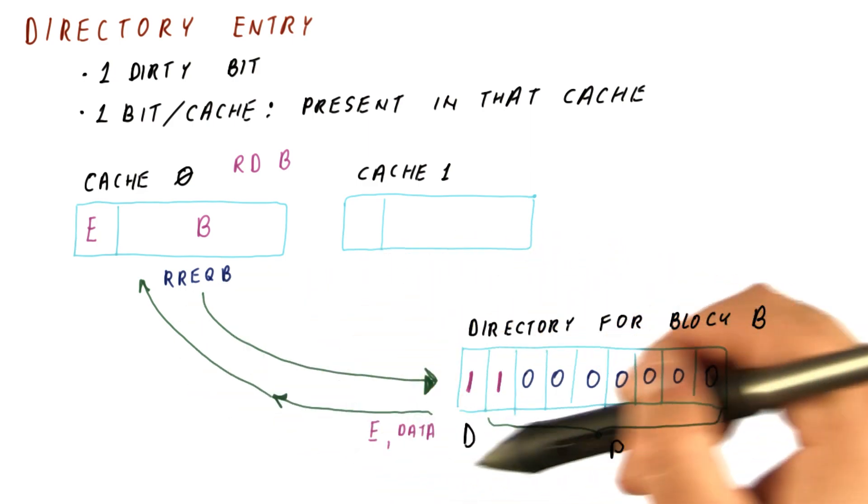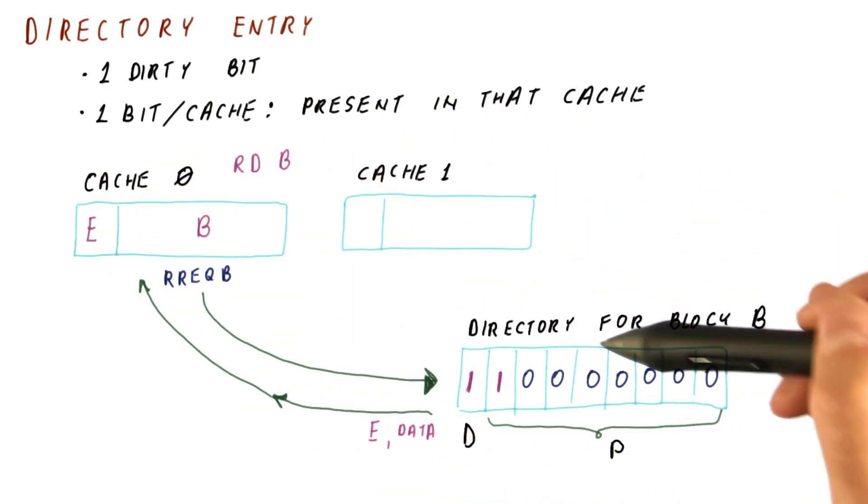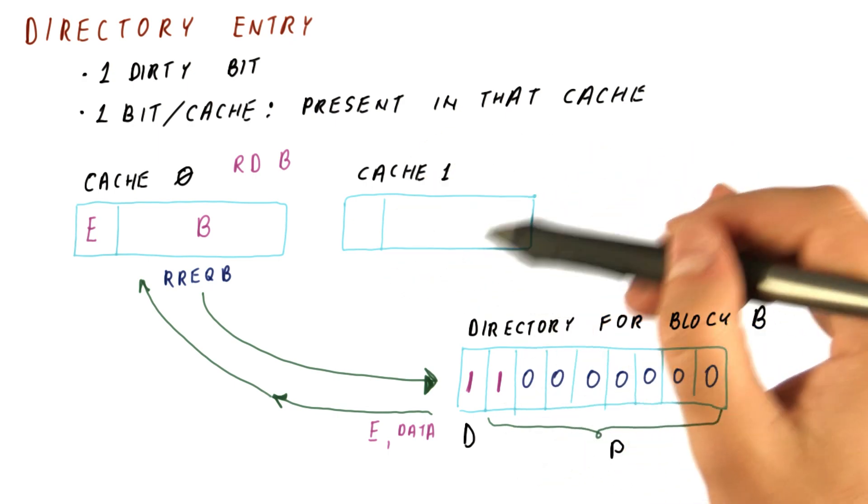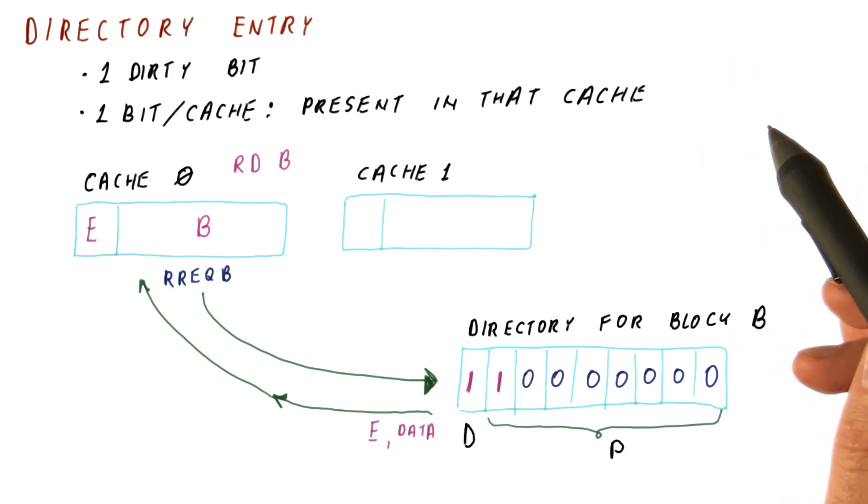So now, why does this work better than a bus? Well, because while cache zero was doing this with this directory slice, cache one could have done something like that for another block with another directory slice completely independently. However, if cache one tried to write to B at about the same time when read B was occurring, we would send a write request to the same directory entry.